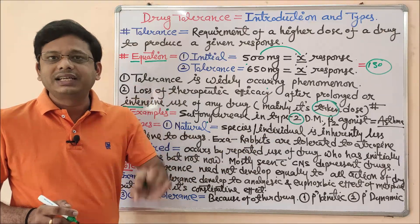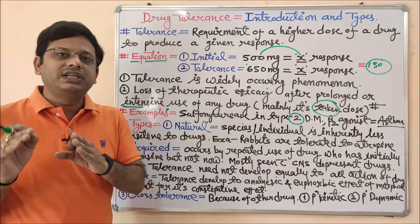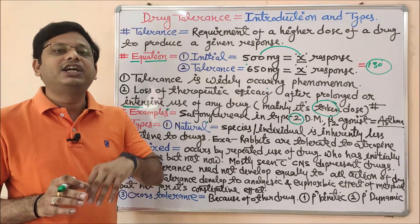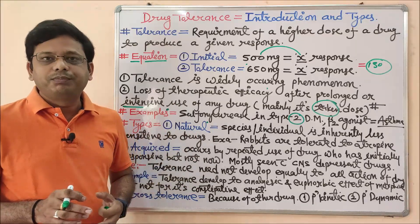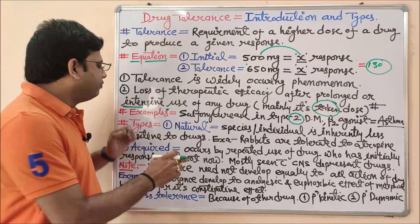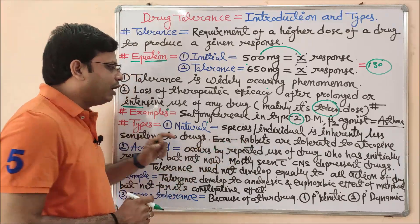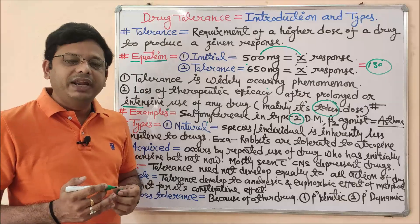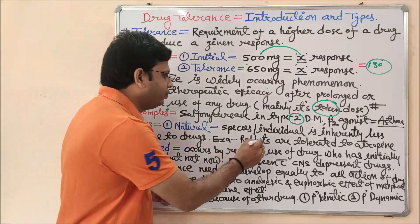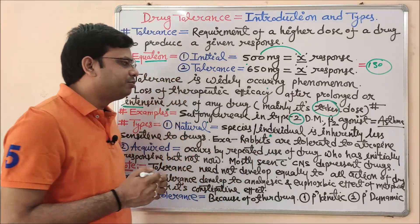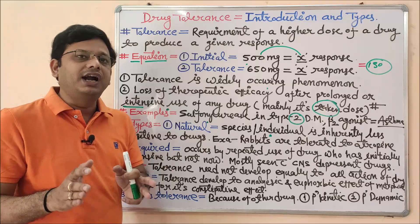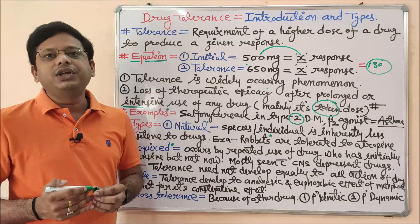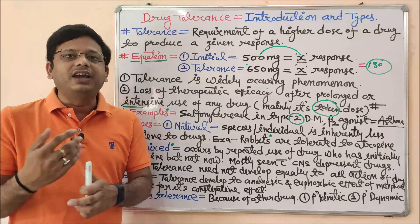Natural tolerance occurs because different species or different individuals are inherently less sensitive to a particular drug depending on their genetics. The same drug may produce different effects in different persons based on their genetic sequence. A very good example: rabbits are naturally tolerant to atropine. Therefore, we do not use rabbits for experimental purposes involving atropine, because they are already tolerant to it.